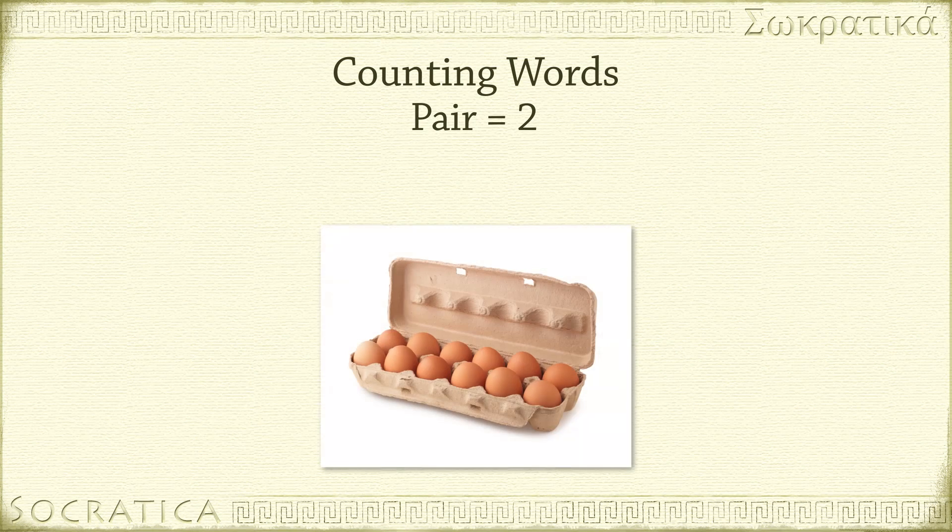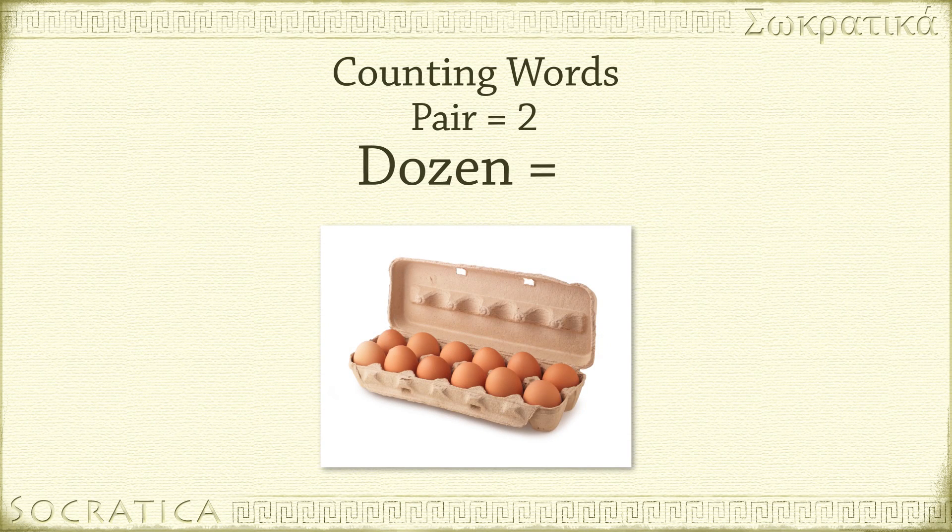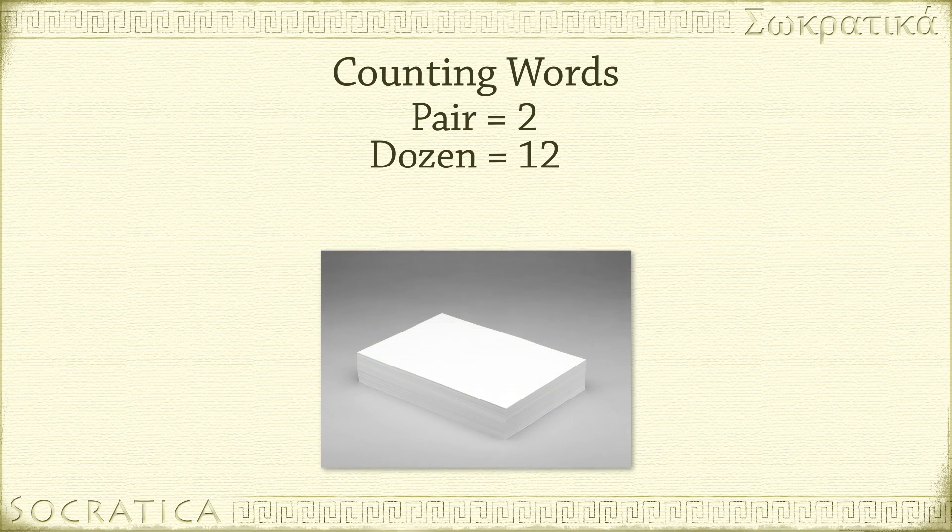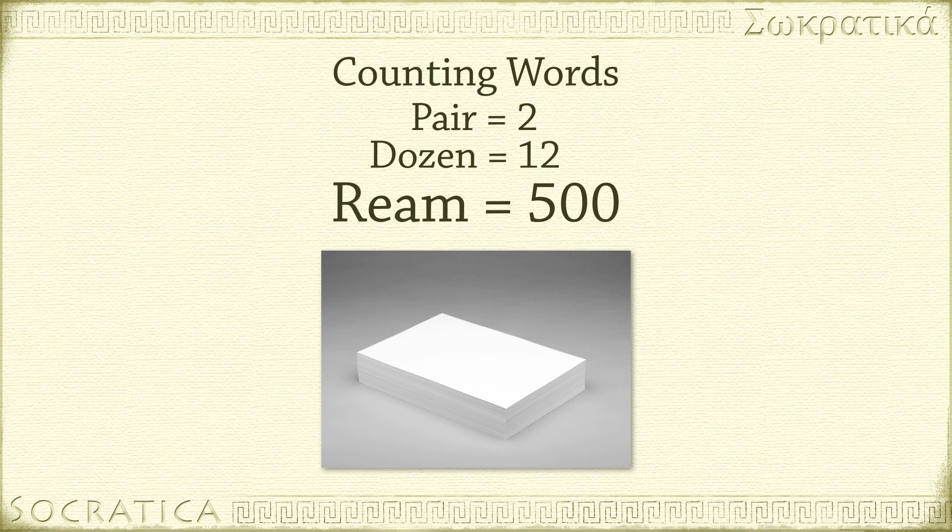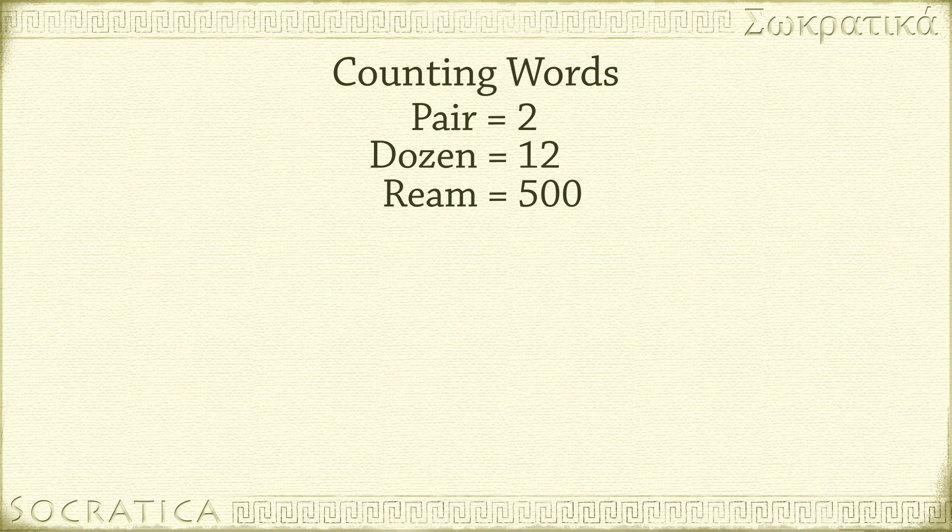We usually buy eggs by the dozen. A dozen means twelve. I can buy a ream of paper, which is five hundred sheets. We use these kinds of counting words - pair, dozen, ream - for specific situations.